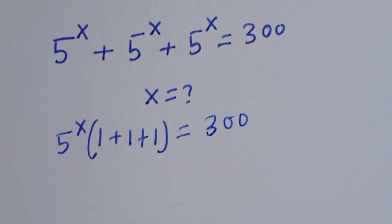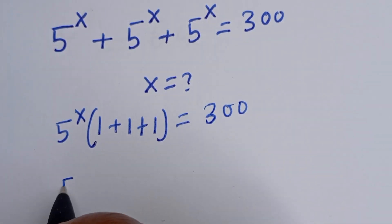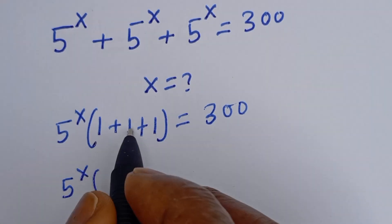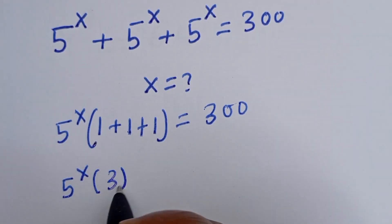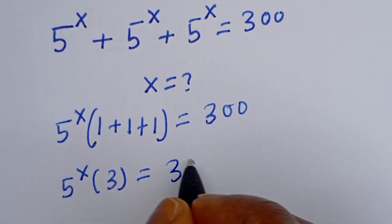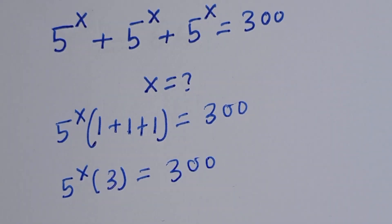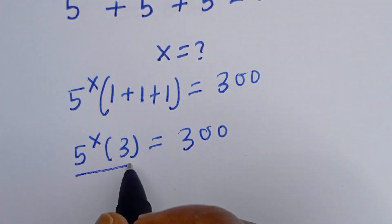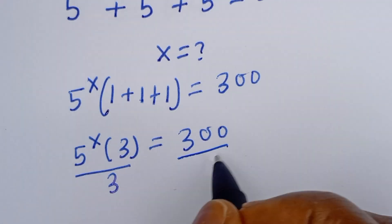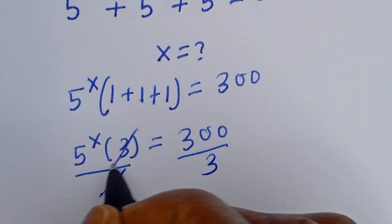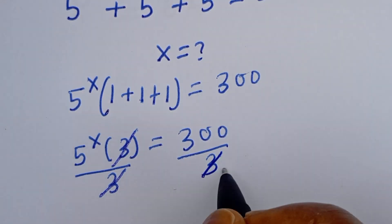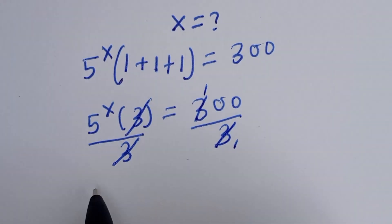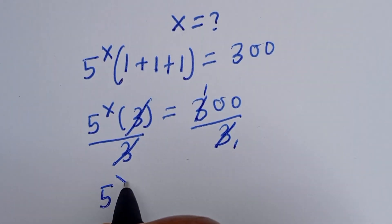Then here we have 5 to the power of s, bracket 1 plus 1 plus 1, that is 3, is equal to 300. Now we can divide both sides by 3 — this divided by 3 and this divided by 3. This will cancel: 3 over 3 is 1, that is 100.